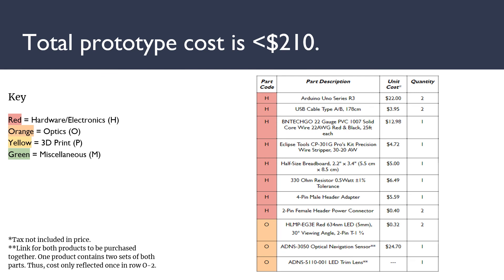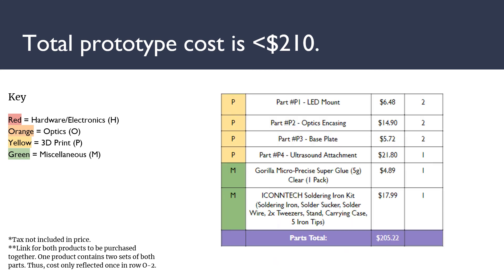Shifting over to look at the cost allocations for our prototype, the total cost comes out to just under $210. It's very important to note that we expect significant reductions in this cost when shifting to production at scale, particularly coming from reductions in the hardware and electronics categories, as well as in the miscellaneous category. We have four main cost categories: hardware and electronics in red, optics in orange, 3D printing material costs in yellow, and other miscellaneous items in green. Most of our costs come from the hardware and electronics category, with 3D printing materials coming in second place.